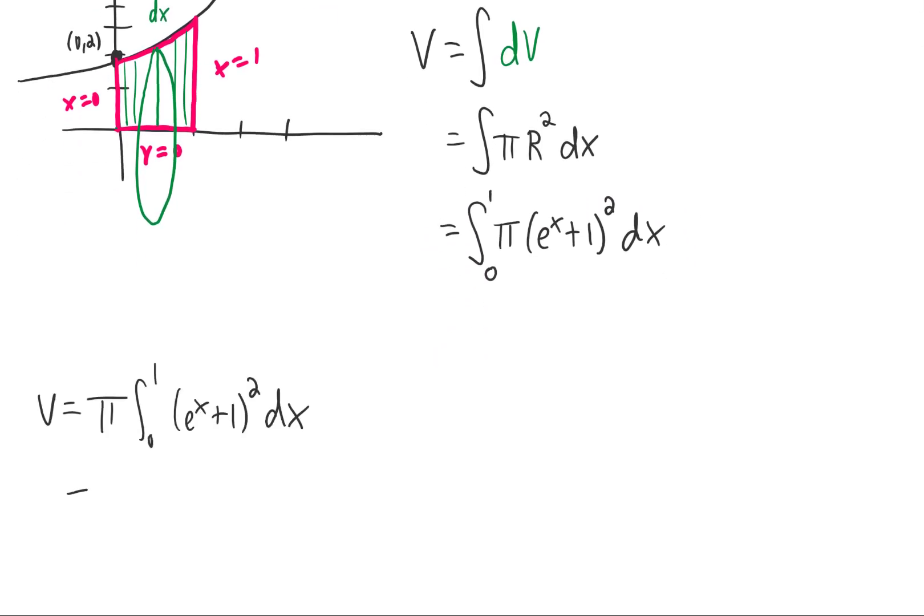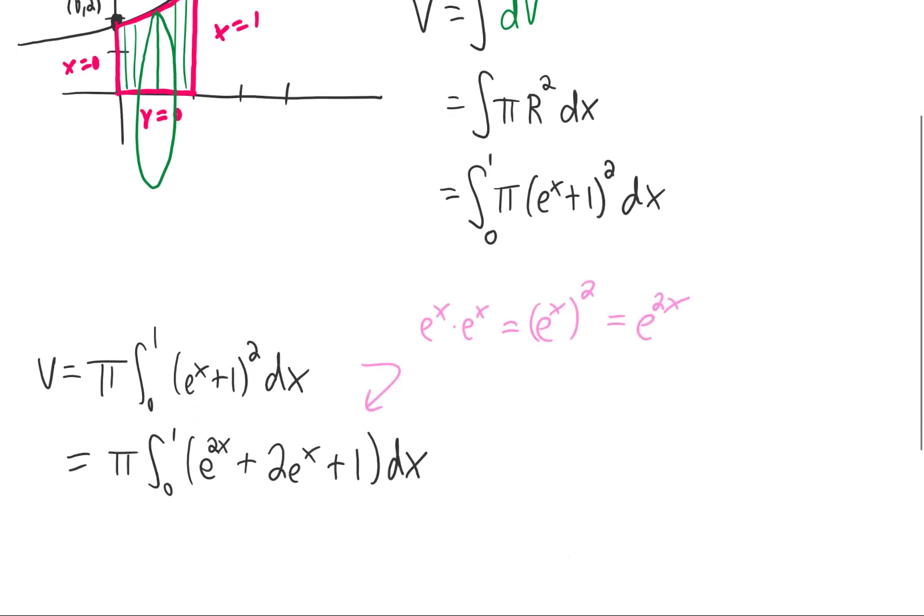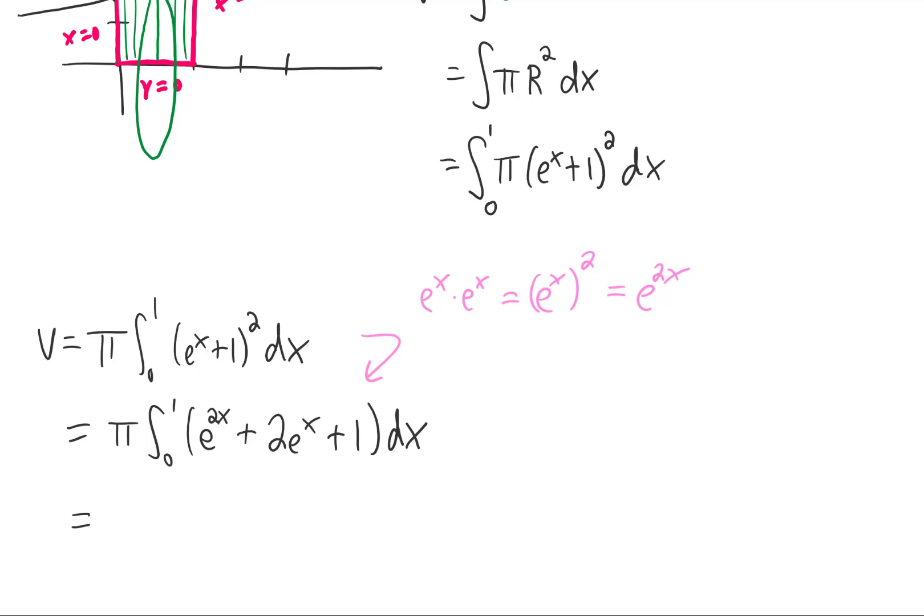Well, we can start by pulling the pi out. And the only way I can see to integrate this is to FOIL this out. Keep in mind that e to the x times e to the x is e to the x squared, which is e to the 2x. And now we can integrate each one of these three pieces fairly easily.